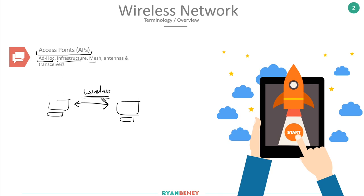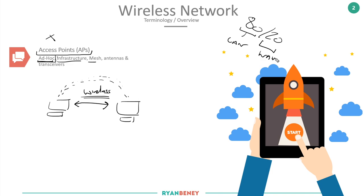Ad hoc doesn't happen much today — a lot of devices don't even support it anymore. It allows a wireless connection from one laptop to another with no access point, literally as if you ran a cable between the two devices. It was originally useful due to the 80/20 split where 80% of traffic was on the LAN and 20% on the WAN. As more things moved to the internet and cloud, those roles switched, which has largely killed the reason for ad hoc. The main modes used today are infrastructure and mesh.